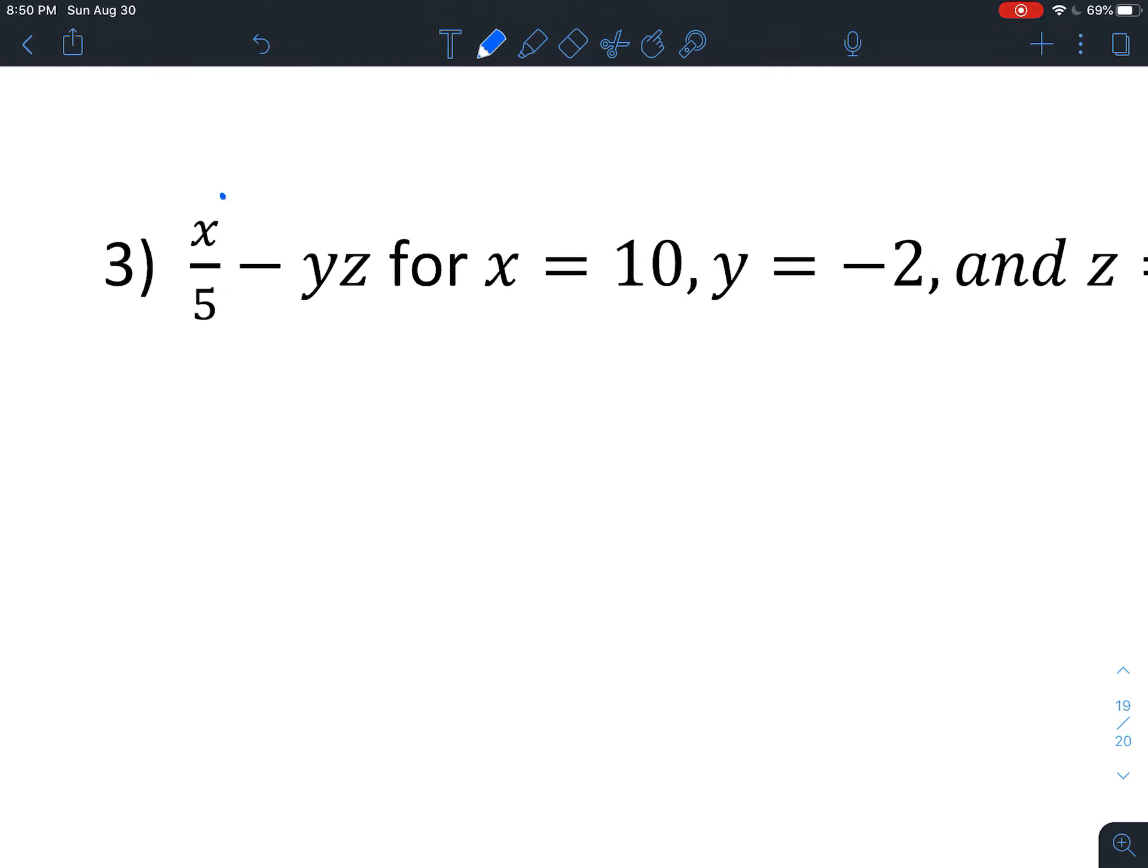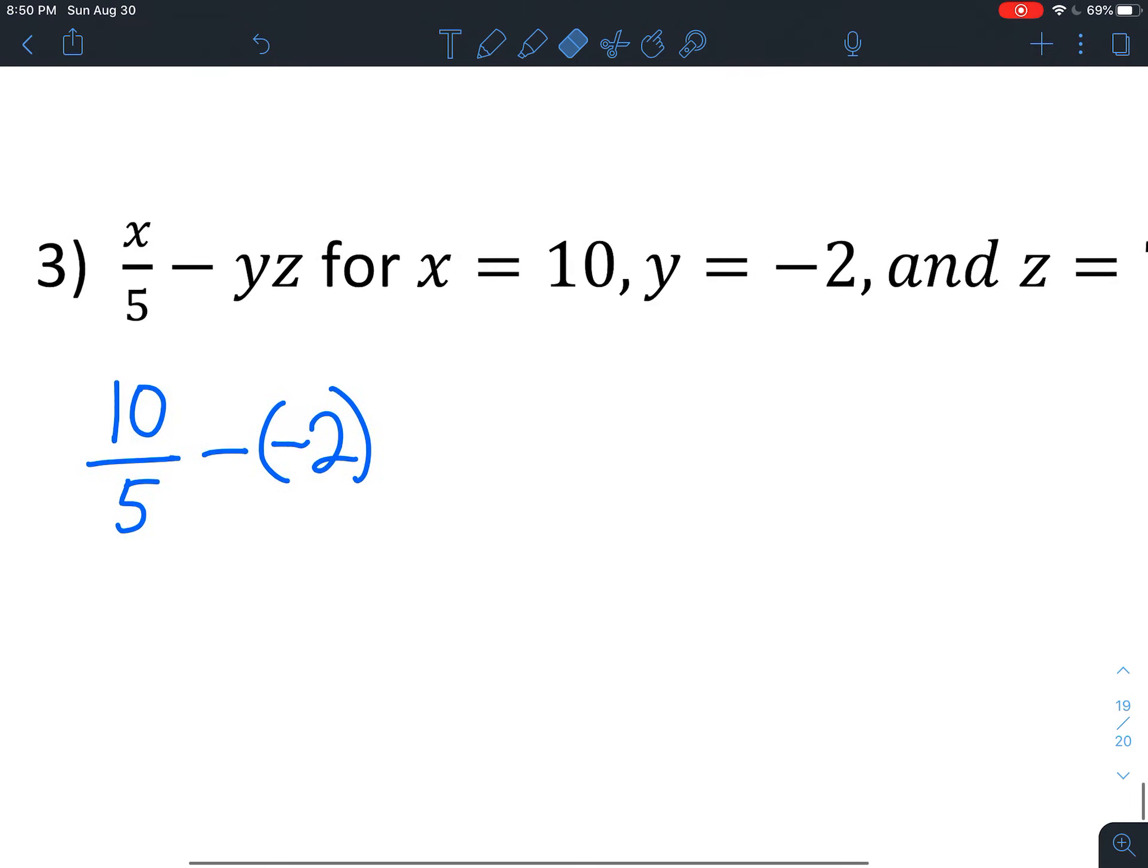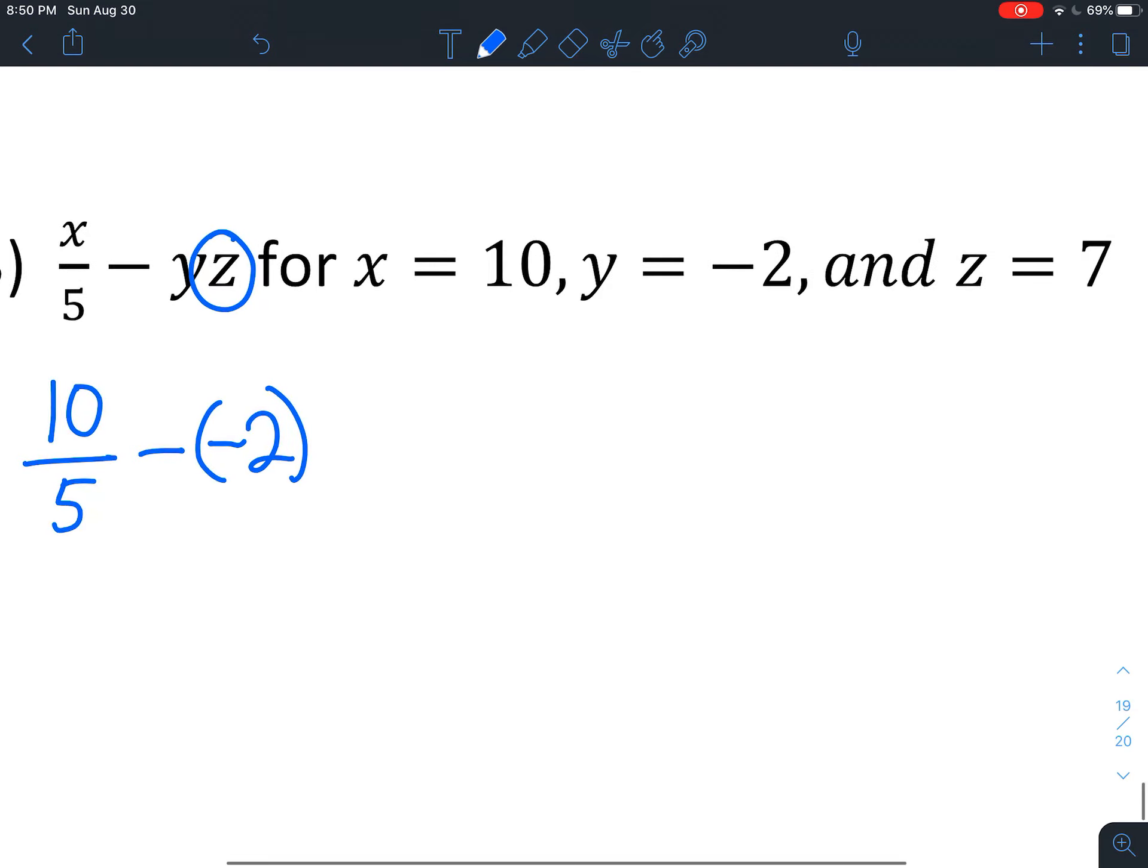x over 5. Let's just identify our variables. x is 10. So we're going to put a 10 right where that x used to be. Minus and now we've got a y and our y is negative 2. So we're going to put negative 2 here. Maybe put parentheses around it just to show that that's negative.